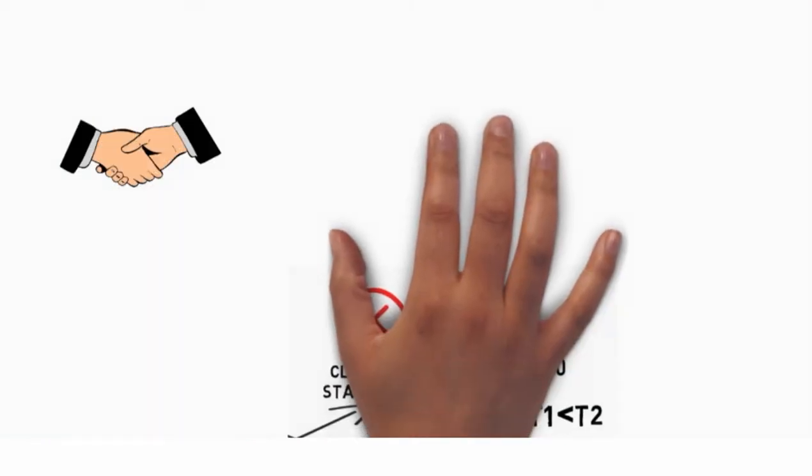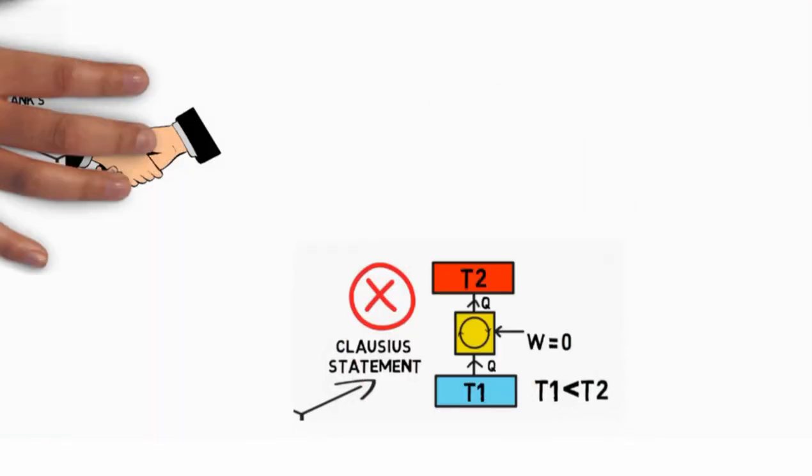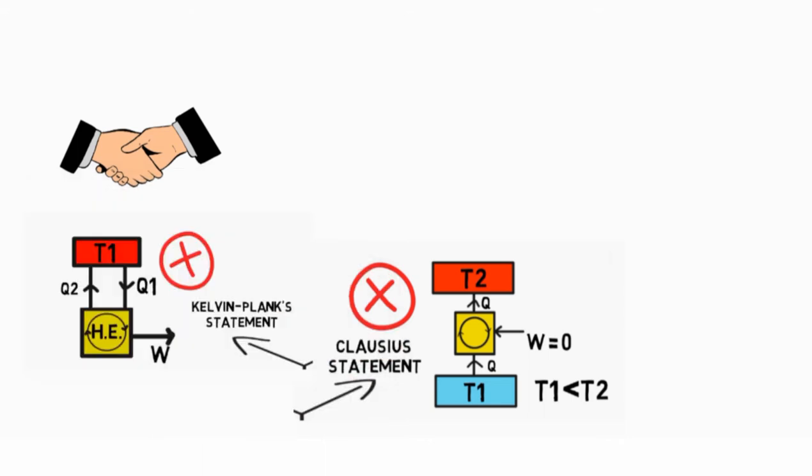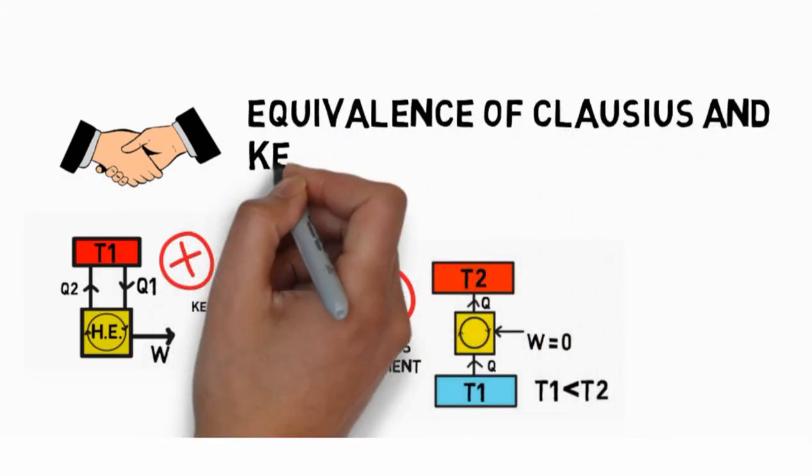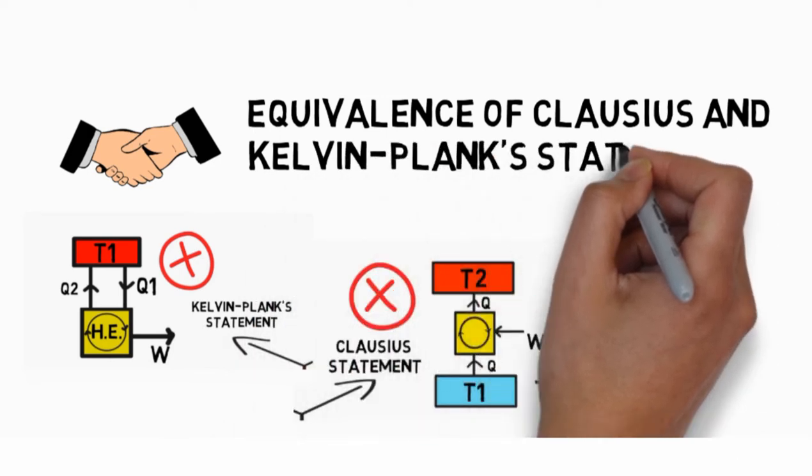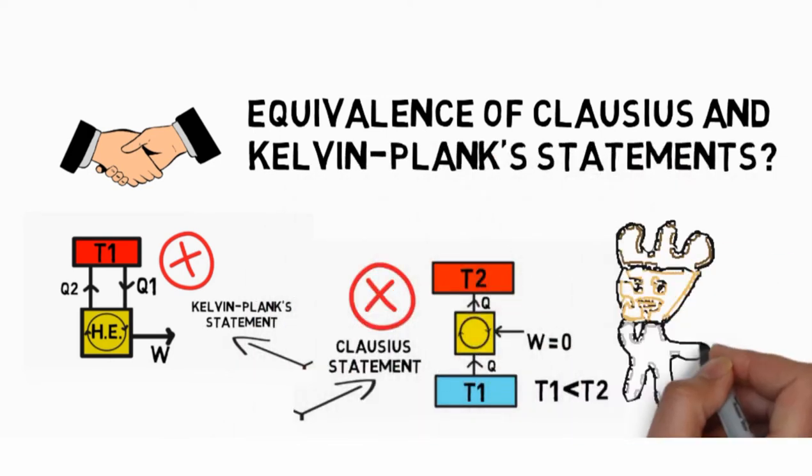Welcome back MechanicalEI. The Clausius and Kelvin-Planck statements are the two statements of the second law of thermodynamics. This makes us wonder, how is the equivalence of Clausius and Kelvin-Planck statements achieved?